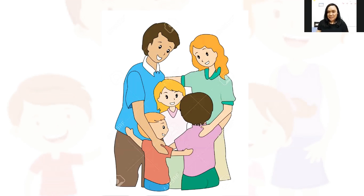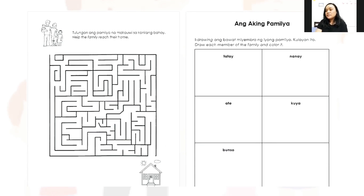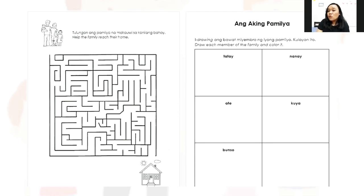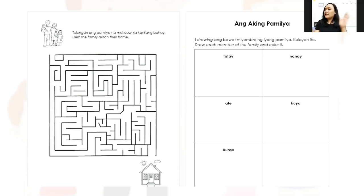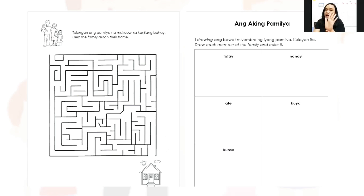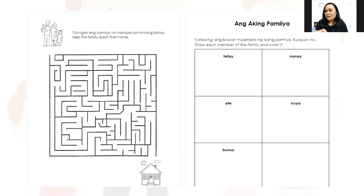For your activity today, you are going to use a maze — help the pamilya get to their house. If you need mommy and daddy's help, ask for their help. On the other side, you are going to draw the members of the pamilya as beautifully as you can. Draw your tatay, nanay, ate, kuya, and bunso. If you don't have some of these members, just draw the ones you have. Don't forget to love each member of your pamilya!